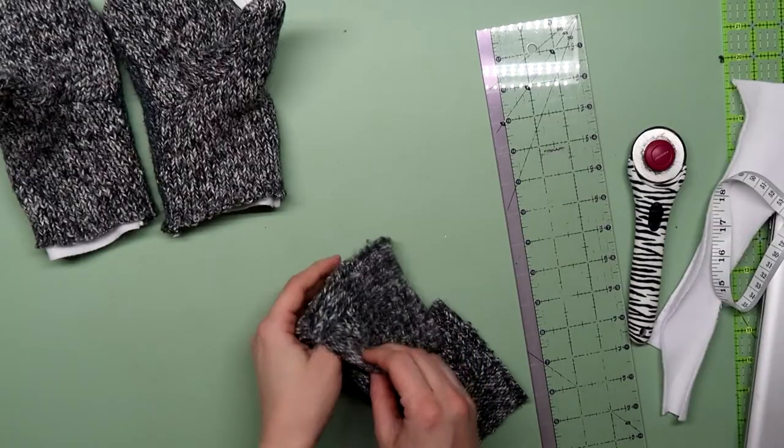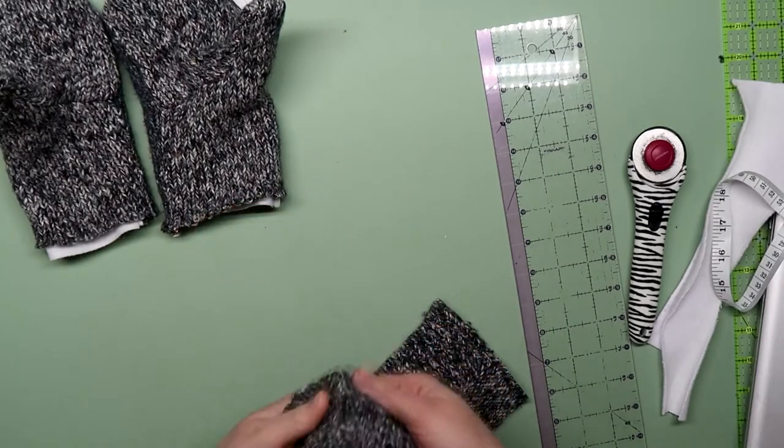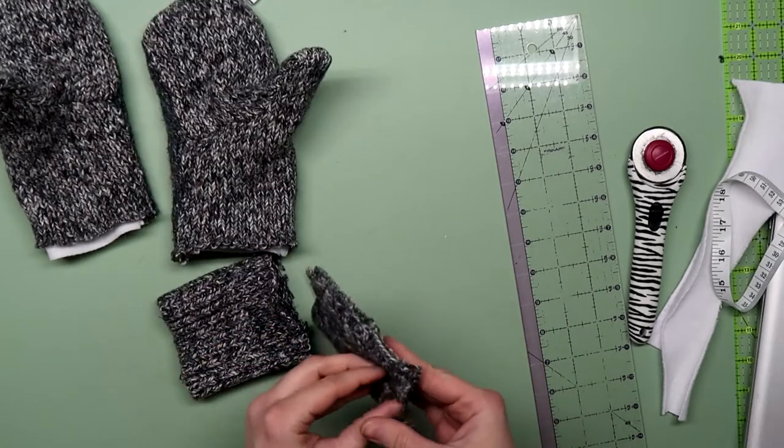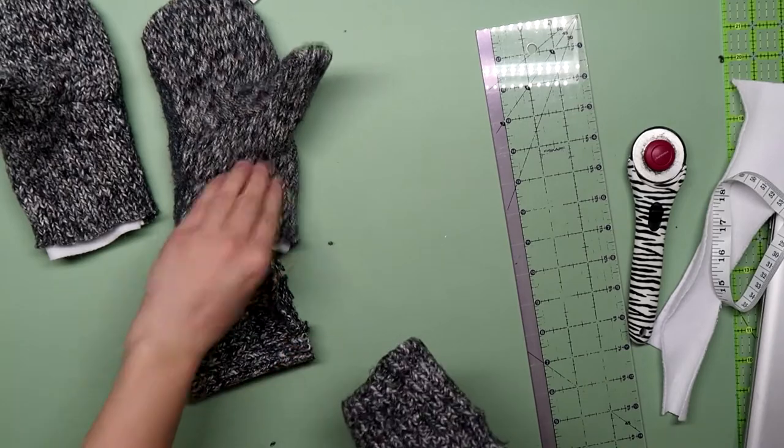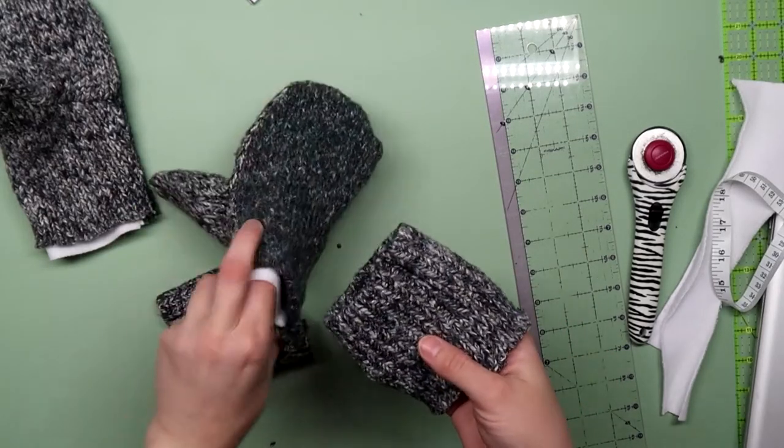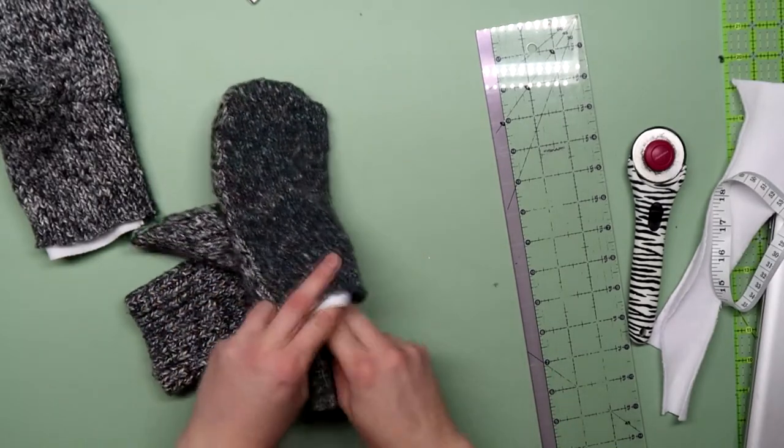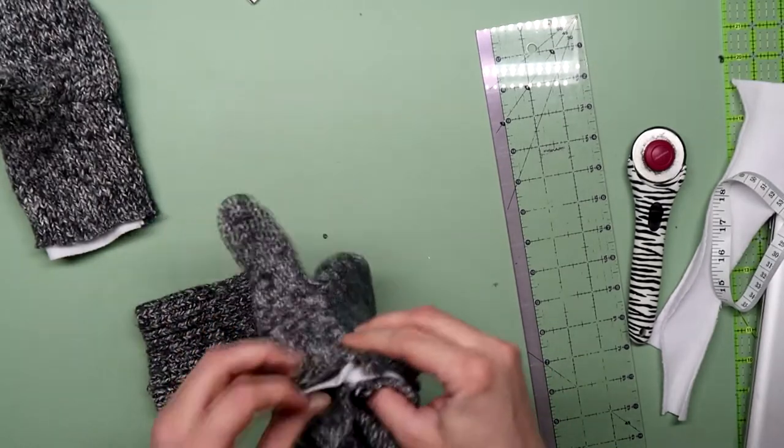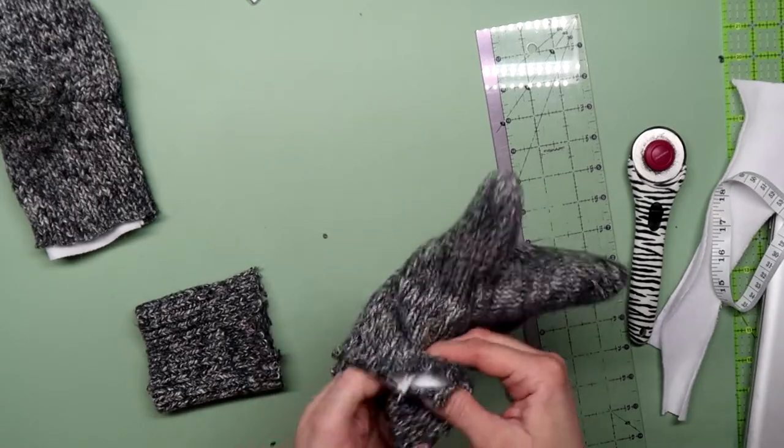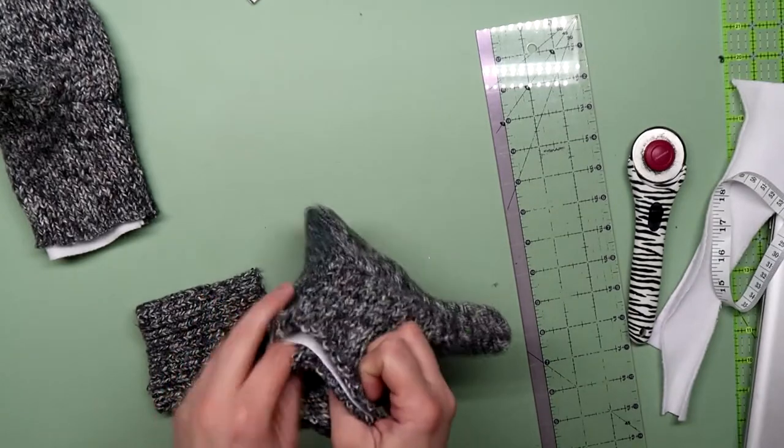Flip that right side out and stuff it into the mitten with the finished edge first. All the raw edges will be together at the opening. Make sure all the seams line up. Just finagle it around until it's smooth.